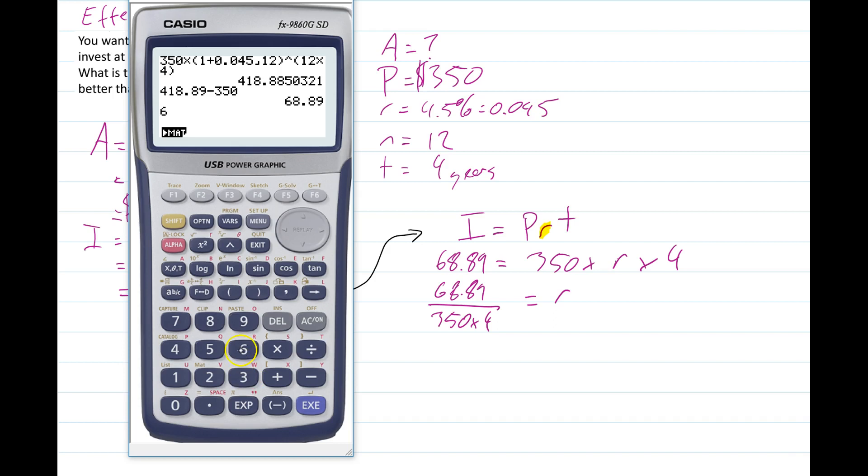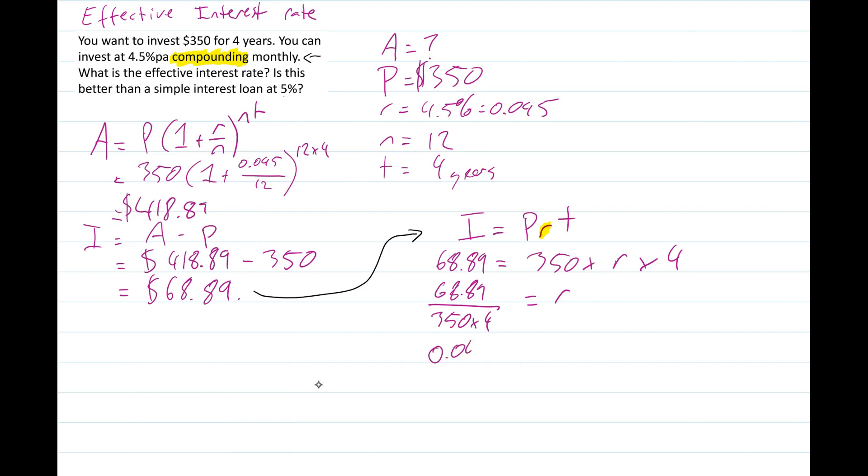Let me move it over a bit. $68.89 divided by $350 times 4 gives us 0.0492. 0.0492 equals R, which, let's turn it into a percentage, gives us 4.92%, which is R.